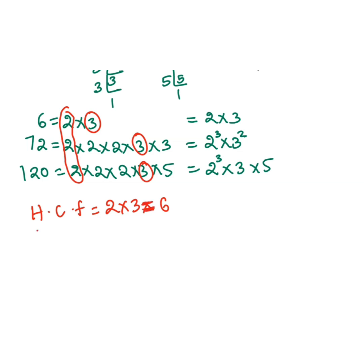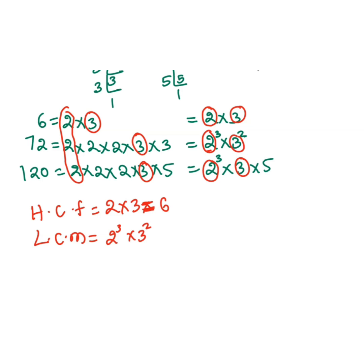To find the LCM, we take the biggest power of each number appearing across all three. The biggest power of 2 is 2³, the biggest power of 3 is 3², and for 5 there is no other occurrence so we write 5 as it is. So LCM = 2³ × 3² × 5 = 8 × 9 × 5 = 360.